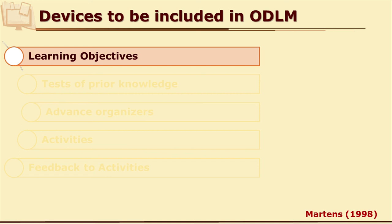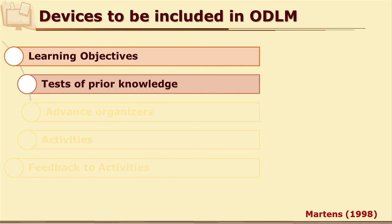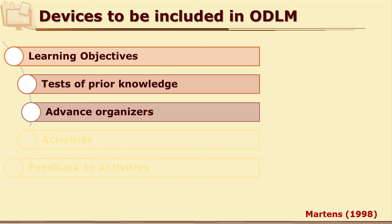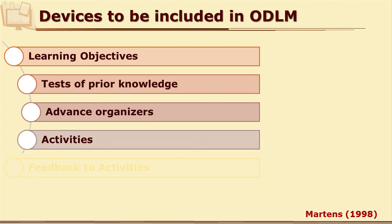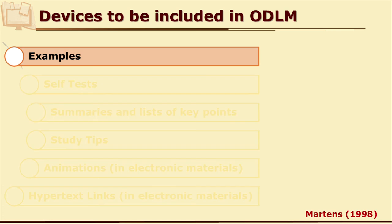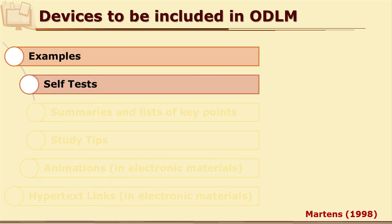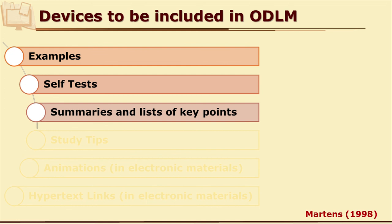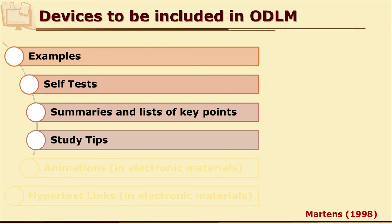Martin says there should be specific learning objectives right at the beginning of any ODL material. There should be opportunity to recall prior knowledge. There should be advanced organizers which give an overview and tell you the exact position of a particular module in the entire content. There should be activities in between to keep learners active, let them know their progress, and feedback is a must in these activities. Give many examples, illustrations, self-check tests, and summaries and list of key points in between.